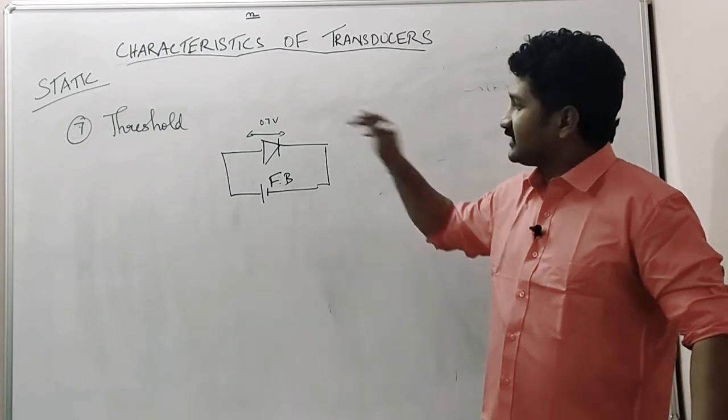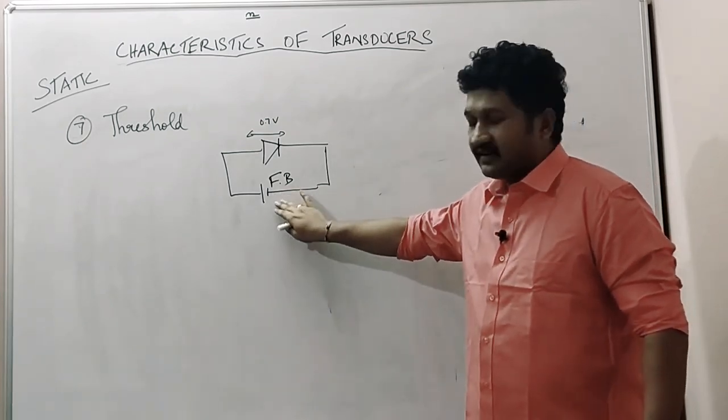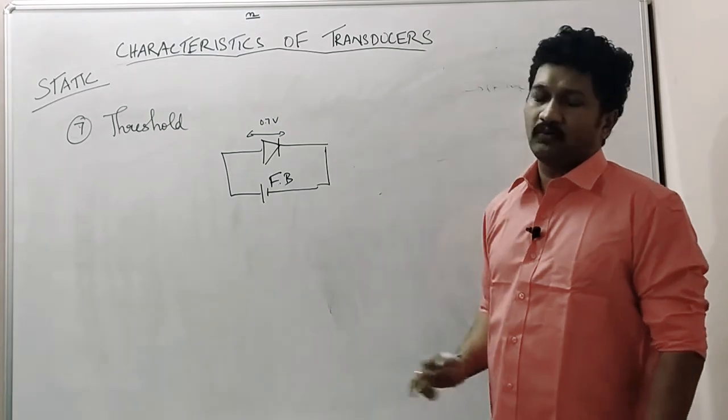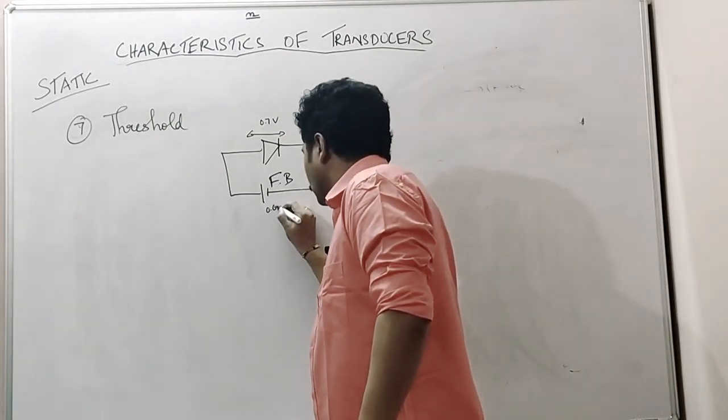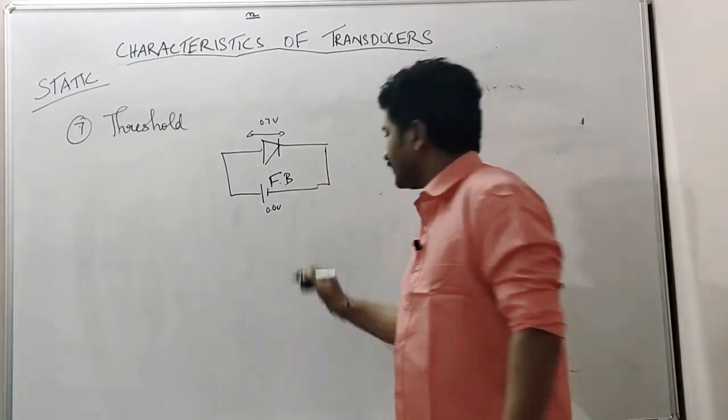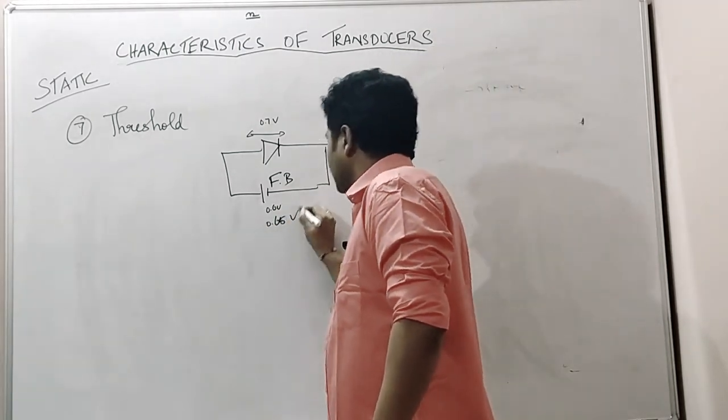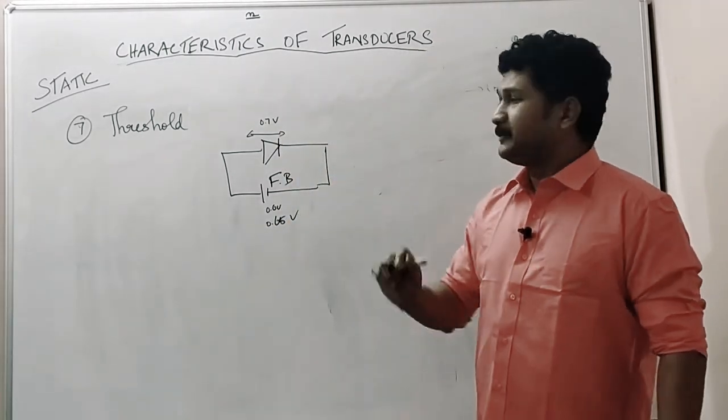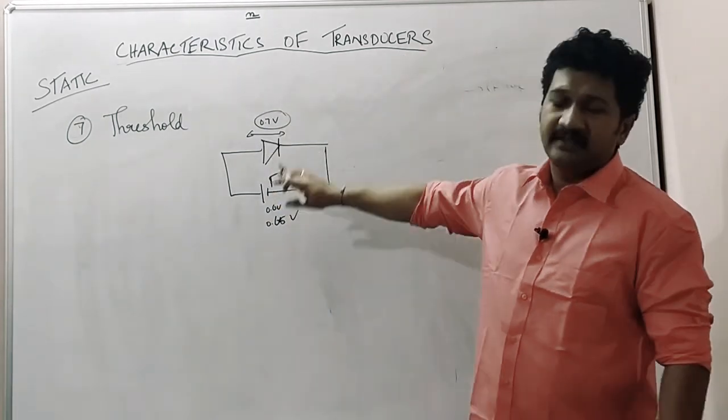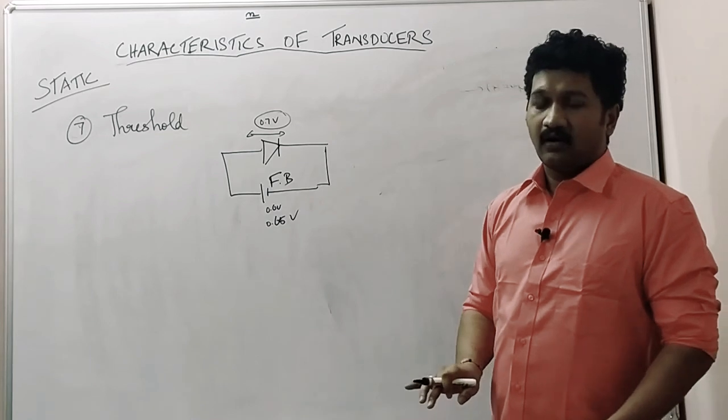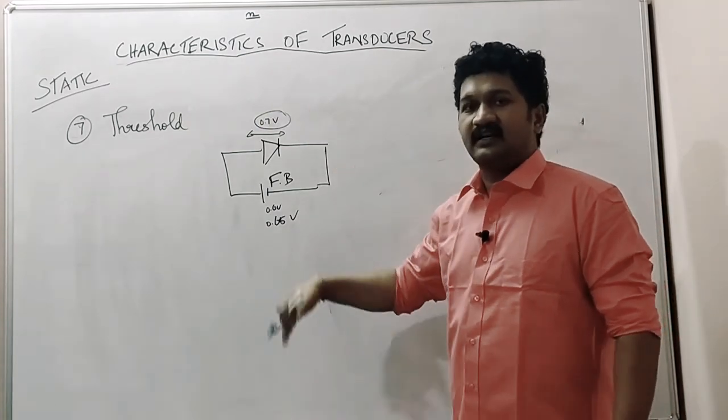For this diode to conduct, the supply voltage given should be above 0.7 volts. So if you give 0.6 volts, this diode does not conduct. 0.65 volts, no conduction. This means 0.7 volts is the threshold point above which the diode conducts, or it is a point below which the diode does not conduct.